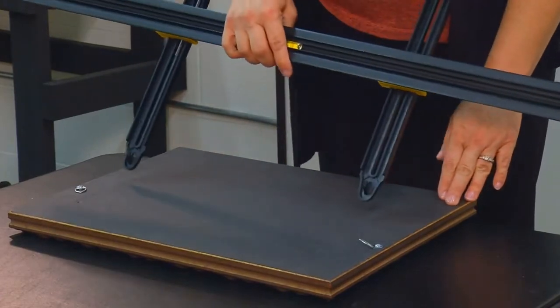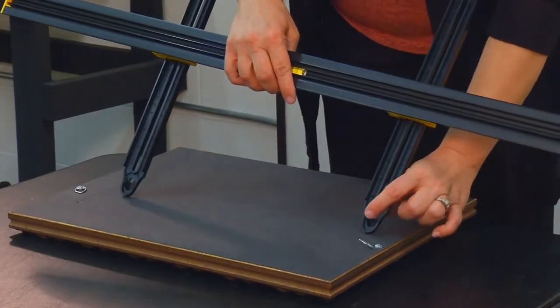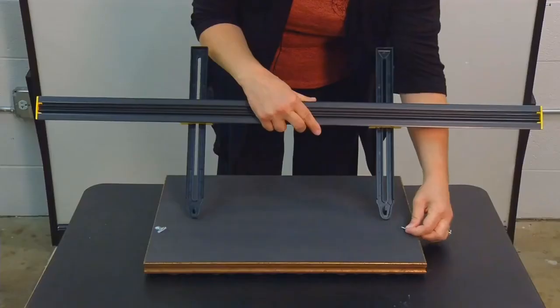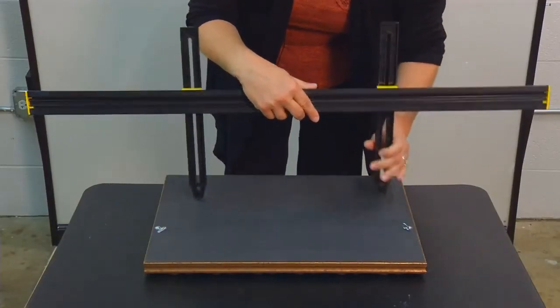We start with our picture face down on a flat surface. On the back of the Hang It Perfect we have these JPEGs that simply slide into the hooks on the back of the picture frame.